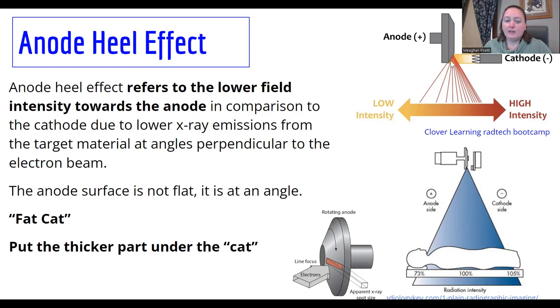Why? Because the anode is not flat. It sits at an angle, and the beam that's coming out on the cathode side can come straight out with nothing in its way. The beam coming out the anode side has to get around the heel or this corner piece here of the anode.